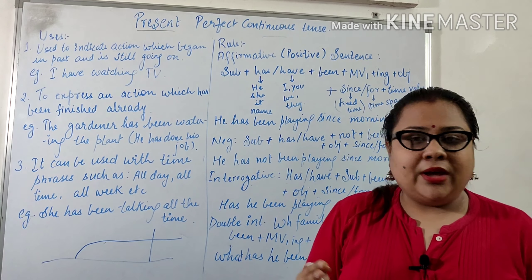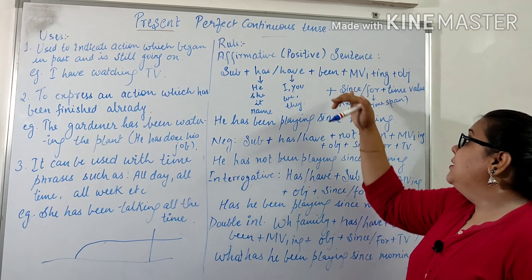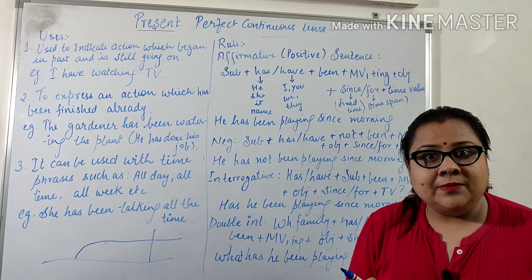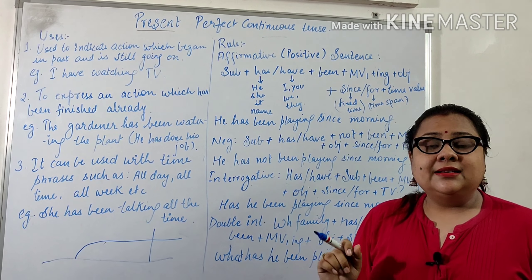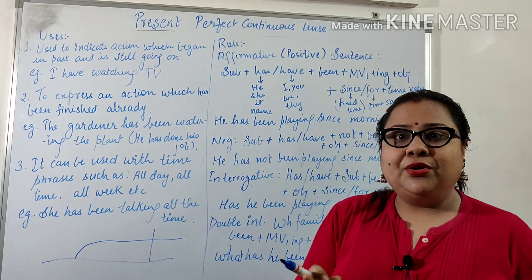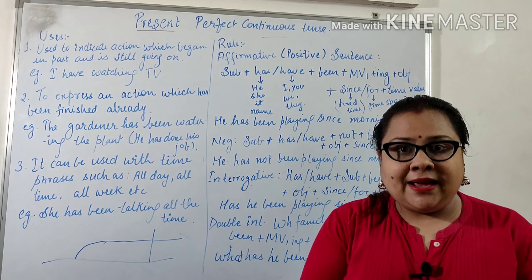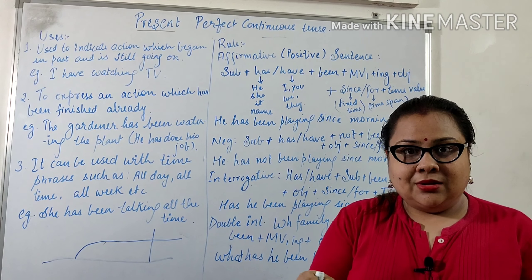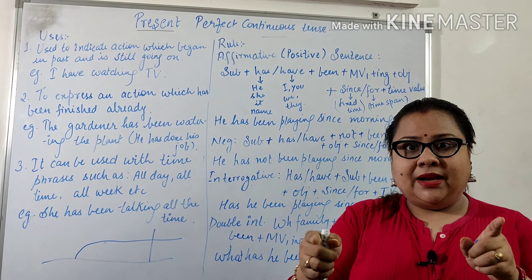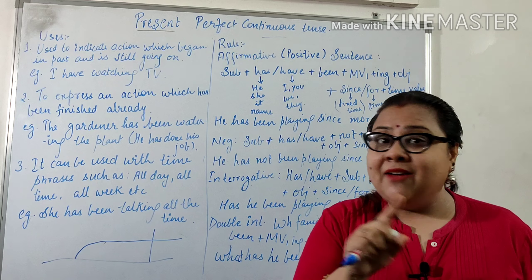Since is used when a fixed time is given — for example: since two o'clock, since January, since 1980. For is used when a time span is given and you don't know the origin — just the duration. For example, when I said 'Dipika ma'am has been teaching us for one month,' I haven't mentioned a specific date, just the time span.